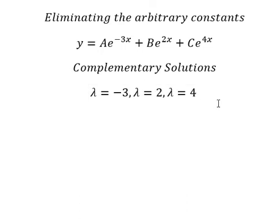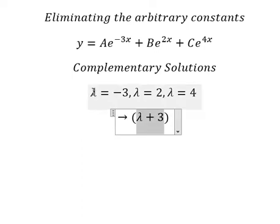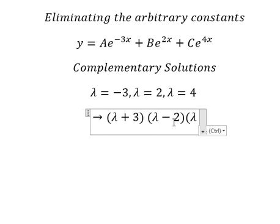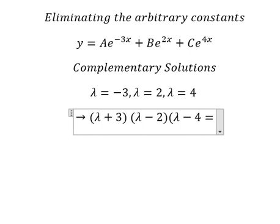And now we can create the factor in here. So lambda plus 3, because that is the solution of this one. Lambda minus 2, and lambda minus 4 equals to 0.